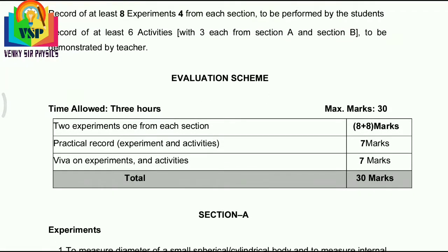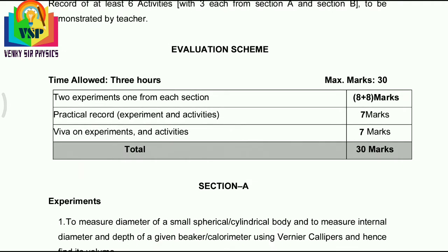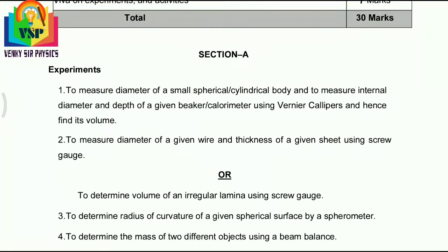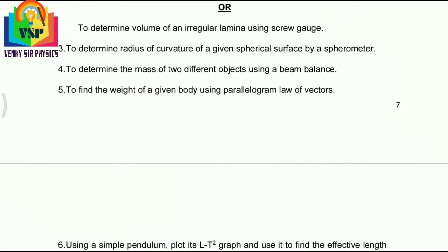Coming to practical marks: two experiments, one from each section — 8 plus 8 marks. Practical record is 7 marks, viva on experiments and activity is 7 marks, total 30 marks internal. These are the experiments from Plus 1.